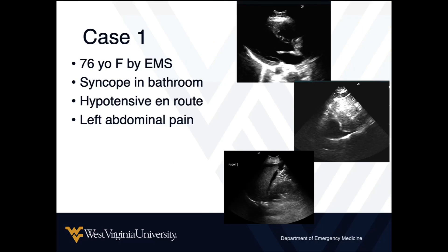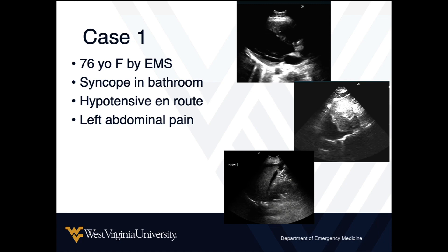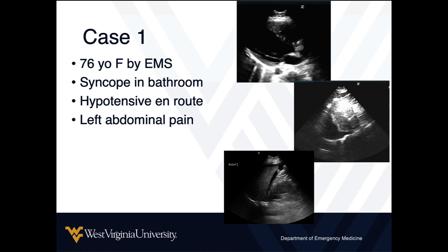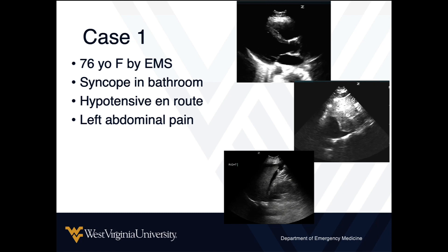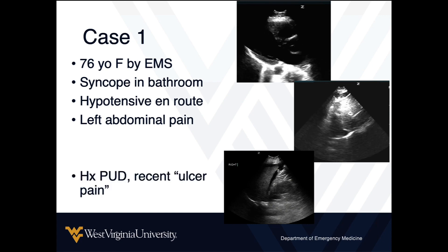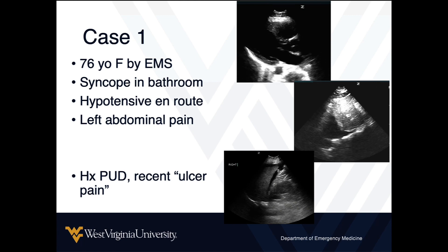I like to introduce real cases to illustrate these concepts — all of these are real cases from myself or my colleagues. First case: a 76-year-old female brought in by EMS after a syncopal episode at home. She's mildly hypotensive en route and has left-sided abdominal pain. She has a history of peptic ulcer disease and, per family, had recently been complaining of ulcer pain.